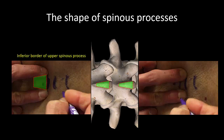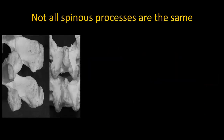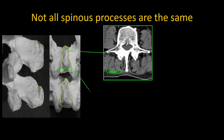Here I am palpating the spinous processes of a patient in the lateral position, with my two fingers straddling the tip of the spinous process. In the image on the left, I am palpating the inferior border of the upper spinous process, and in the image on the right, I am palpating the superior border of the lower spinous process. Note the difference in distance between my two fingertips, which corresponds to the difference in width of the spinous process. In real patients, spinous processes are not regular, though the pyramidal change in width generally holds true.